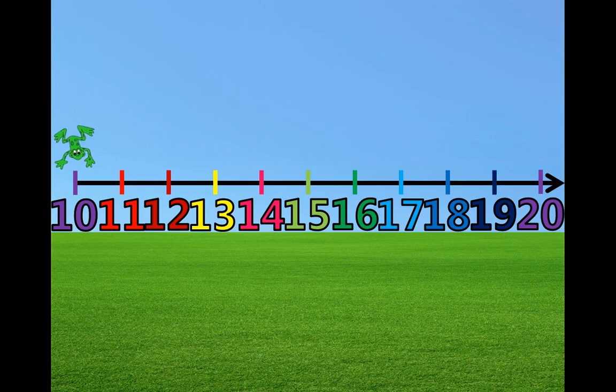This is Froggy the Frog. He likes to jump around on the number line. He's going to help us count from 10 to 20 on the number line. You can help him count too. When he jumps, you can say the number with us.